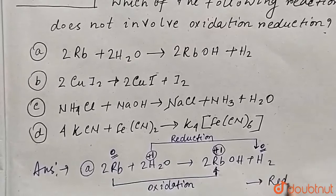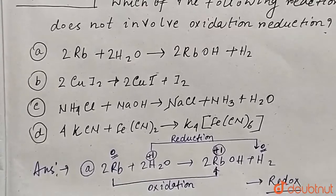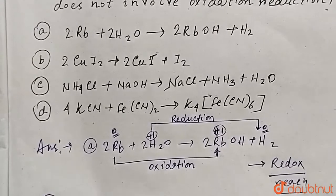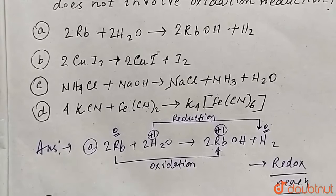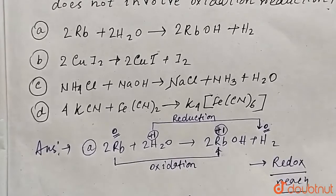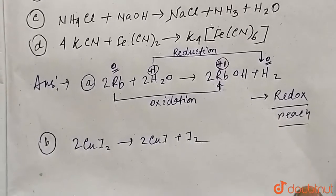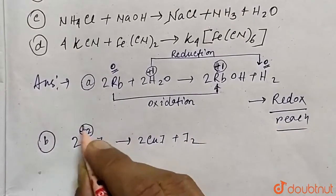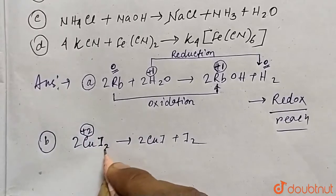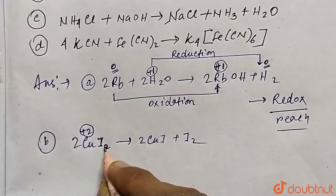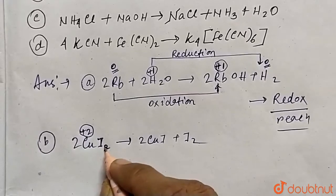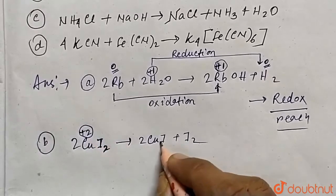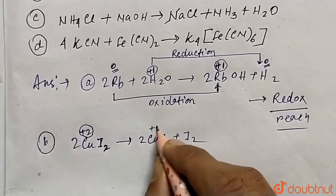Reaction B: 2CuI₂ → 2CuI + I₂. Copper in CuI₂ has oxidation state +2, because iodine always has oxidation state -1, so 2 iodines give -2 total, meaning copper must be +2.